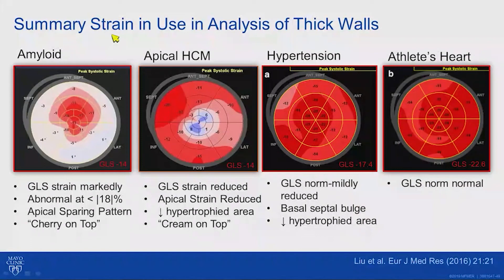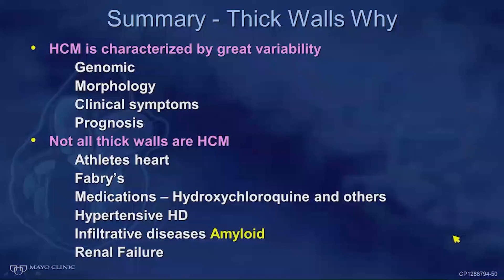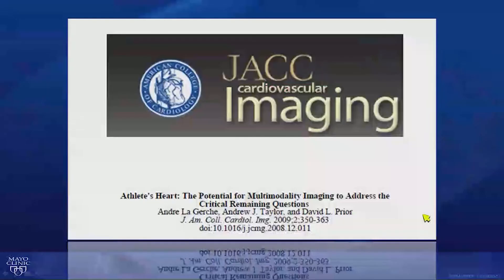Strain has been another leap forward for pattern recognition. With hypertrophic cardiomyopathy apical variant, there is diminished strain at the apex — a 'cream on top' effect. With the septal variant, the septum shows decreased strain. Hypertensive heart disease may have mildly reduced strain but not to the same degree as HCM or amyloid. Athlete's heart shows normal global longitudinal strain. In summary, evaluating thick walls requires thinking about genomics, morphology, clinical symptoms, and prognosis — a broad internal medicine thought process working through a wide differential.